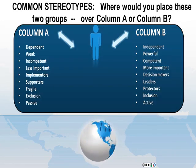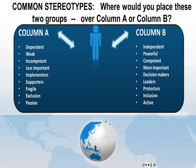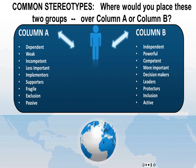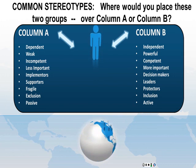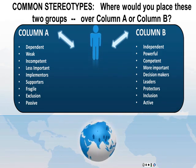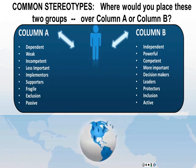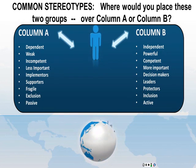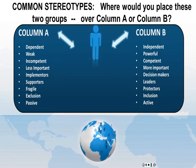Common stereotypes. Where would you place these two groups — column A or column B? Column A includes: dependent, weak, incompetent, less important, implementers, supporters, fragile, exclusion, and passive.